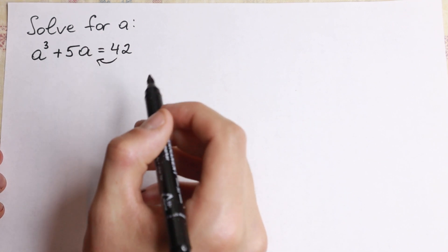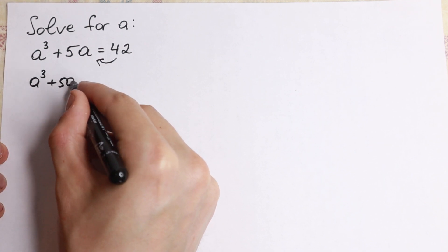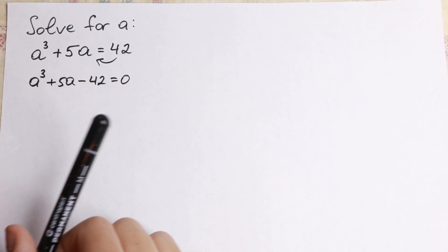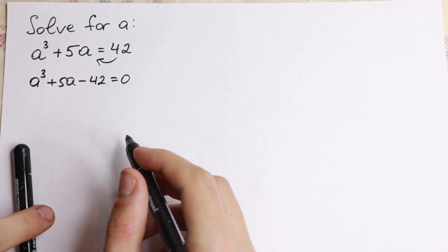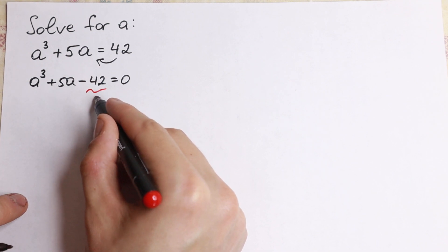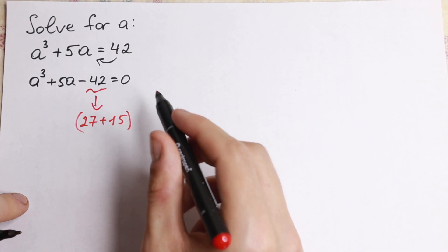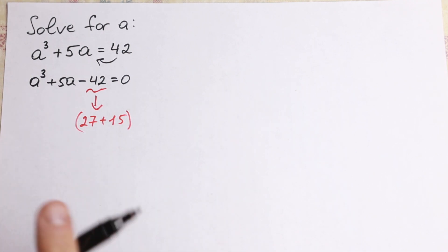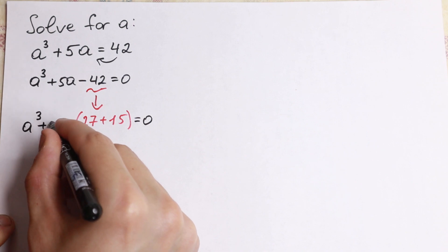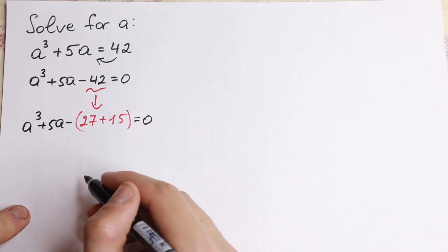First of all, we bring this 42 to the left hand side. We will have a cube plus 5a minus 42 equal to zero. Next, let's write 42 as 27 plus 15. So we rewrite the equation as a cube plus 5a minus 27 minus 15 equal to zero.